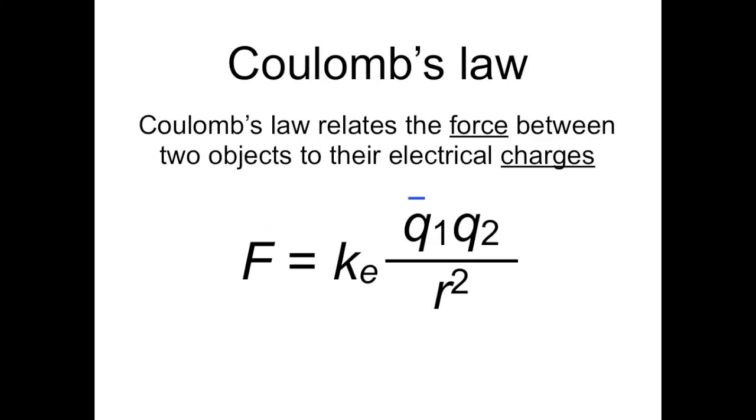Now let's suppose q1 is negative, and that q2 is also negative. Multiplying two negatives again results in a positive force, so again, q1 and q2 will repel. If one of the charges is positive while the other is negative, then their product will also be negative, which means the force is attractive.